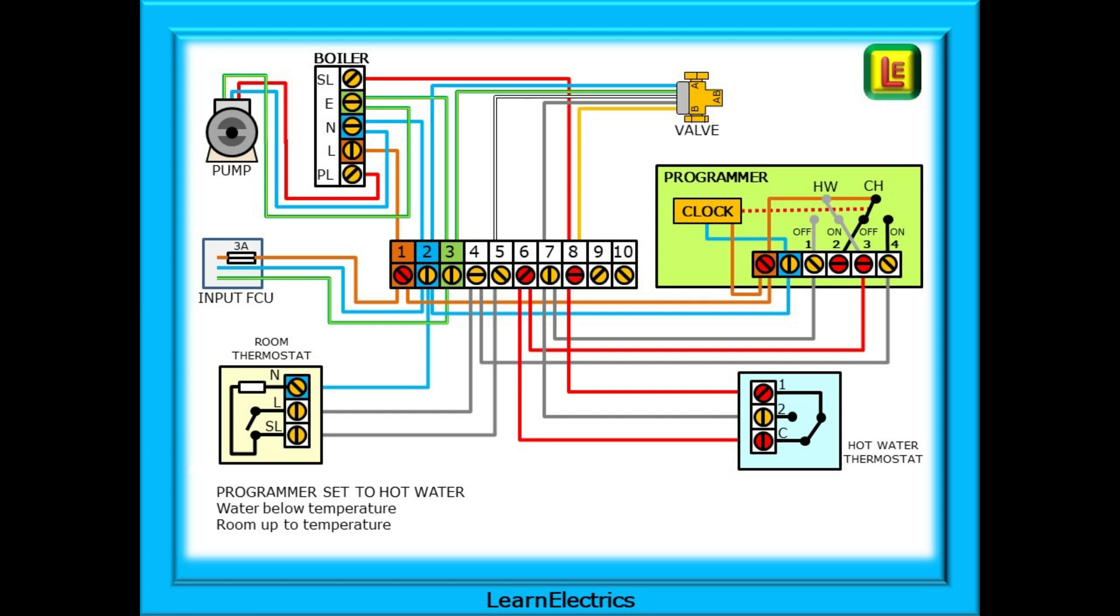At some point the water temperature has dropped. The water thermostat has changed contact positions. Common is now connected to one. The 240 volts on C passes to terminal one and back up to wiring center number eight. Through eight to the boiler and turns the boiler and pump on. Because terminal two in the water thermostat is not connected to C, it loses the 240 volts, and as a result wiring center seven falls to zero volts, and this enables the valve to connect AB to B and permits water flow to heat up the water cylinder.